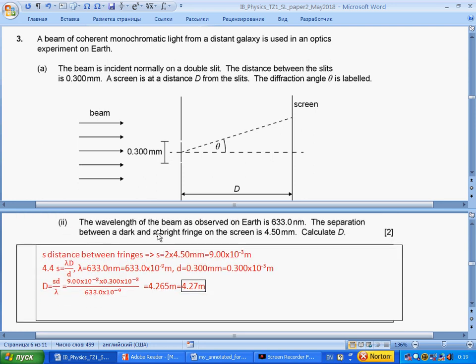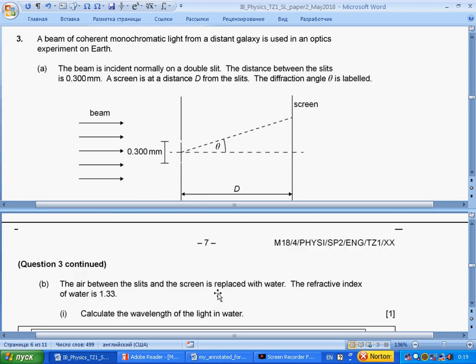The wavelength of the beam observed on Earth is given. The separation between the dark and bright fringes is given. Calculate D. Distance between dark and dark will be two times more. This is distance between fringes s. Distance between fringes will be two times this distance. From section 4.4 we get formula for fringe width or fringe separation. We rearrange this formula for capital D and get answer in three significant figures.